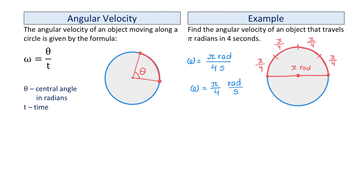So with linear velocity we divide the length of the arc by time, while with angular velocity we divide the angle by time.